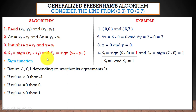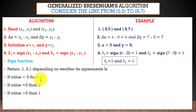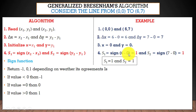We calculate s1 using the sign function: sign(x2 − x1). As covered in the DDA algorithm, the sign function returns −1, 0, or 1 depending on whether the value is less than 0, equal to 0, or greater than 0 respectively. Here, x2 − x1 = 6 − 0 = 6, which is greater than 0, so s1 = 1. Similarly for s2: y2 − y1 = 7, which is greater than 0, so s2 = 1.